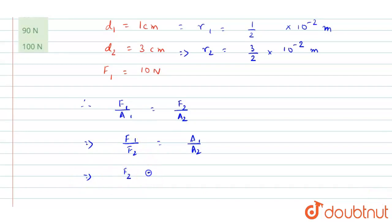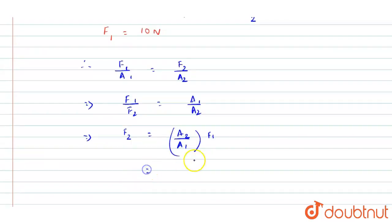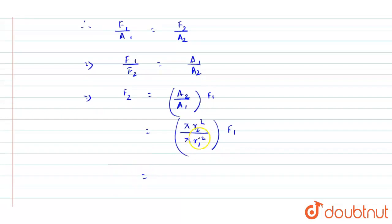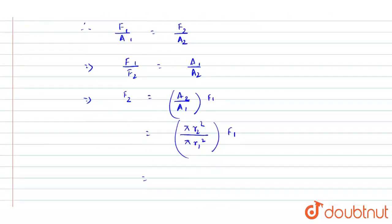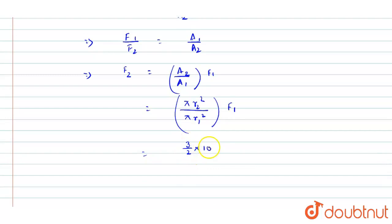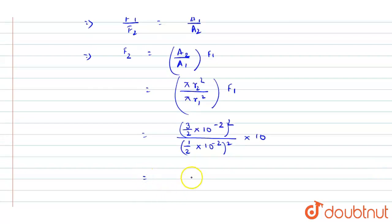We need to find f2. So f2 equals (a2 by a1) into f1. Here a2 is π·r2² and a1 is π·r1², so the π cancels. Substituting: r2 = 3/2 × 10⁻² meters and r1 = 1/2 × 10⁻² meters, giving us (3/2)² divided by (1/2)² into 10 newtons.